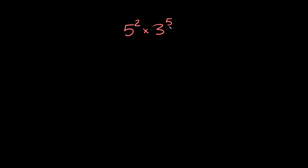So here we have 5 squared times 3 to the 5th. You can see that the bases, 5 and 3, are both prime. And our exponents, 2 and 5, are also both prime.